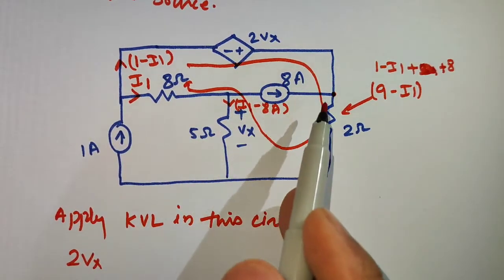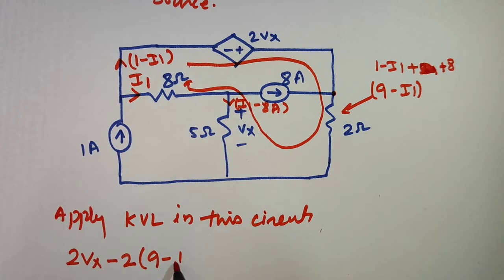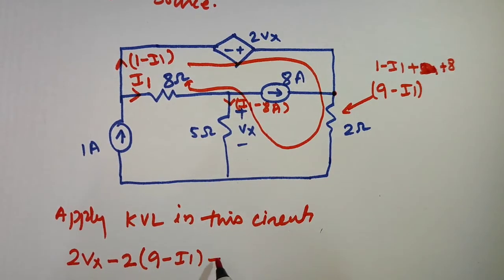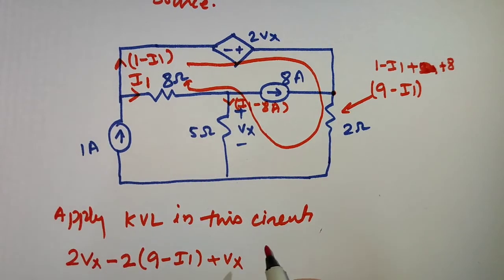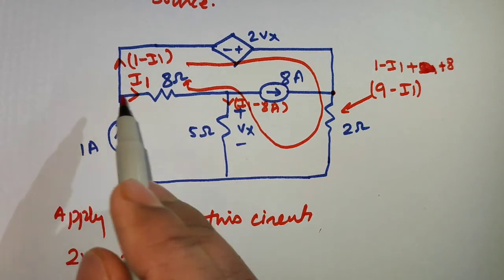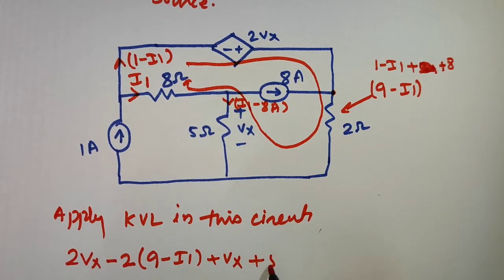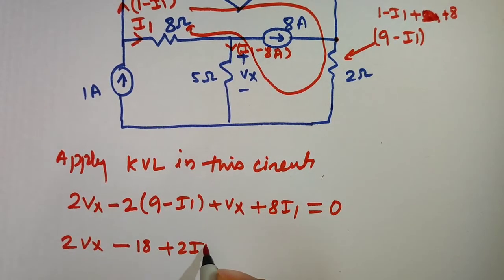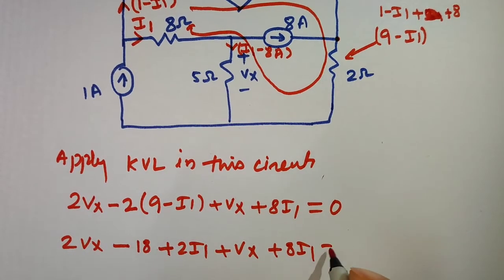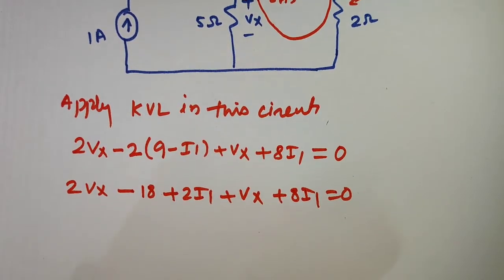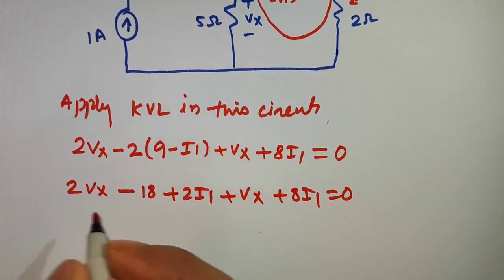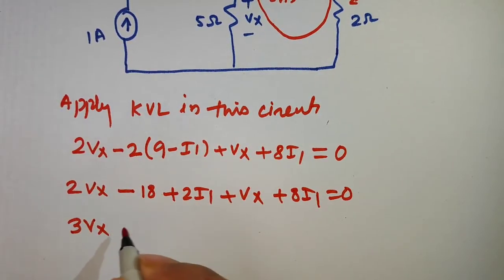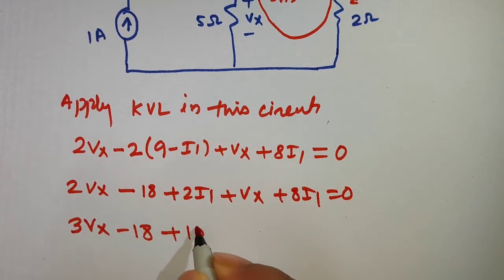Applying KVL in this circuit, we get a minus sign, hence it will be plus 2Vx. Then it will come to minus 2 times (9 minus I1). Then we come to Vx — we take Vx as positive because a negative sign is there. Again the current direction is this side, hence we take it as positive. So the KVL equation is: 2Vx minus 18 plus 2I1 plus Vx plus 8I1 equals zero.